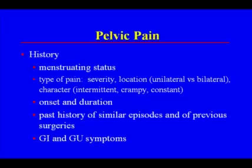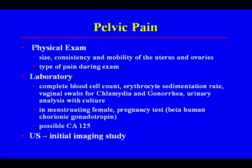Associated gastrointestinal and genitourinary symptoms should be obtained. A good physical exam should be done — size, consistency, and mobility of the uterus and ovaries should be documented. Laboratory assays include complete blood cell count, erythrocyte sedimentation rate, vaginal swabs for chlamydia and gonorrhea, urinary analysis with culture. In the menstruating female, a beta-hCG pregnancy test should be considered, and possibly a CA-125. However, the initial imaging study should always be an ultrasound.